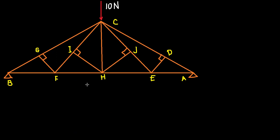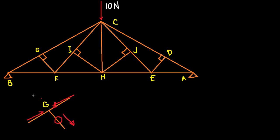Now let's apply this to the problem. Looking at joint G, we have three members connected to a single joint — two collinear and one non-collinear. There are no external forces or loading acting on this joint, which means the non-collinear member GF is our zero force member. So GF is our first zero force member.